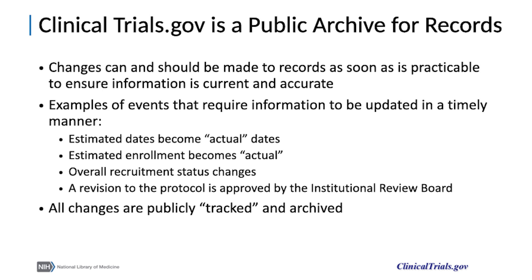Registered trial information must be kept up to date as the study progresses. Changes should be made as soon as practical to ensure that information is current and accurate. For example, when start and completion dates are firmly established, when the recruitment status changes, or when there are amendments to the protocol, these events are required to be reflected in the published record. All changes are tracked and archived on the clinicaltrials.gov site.